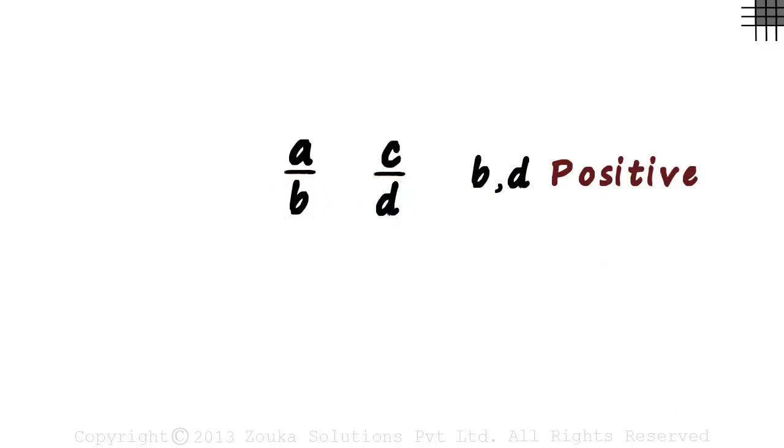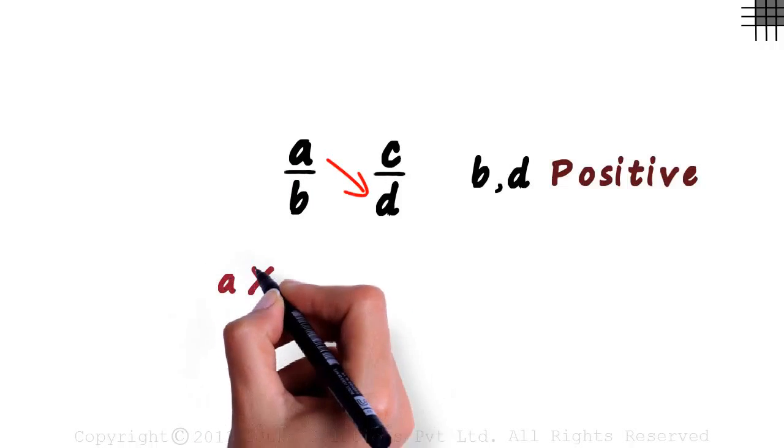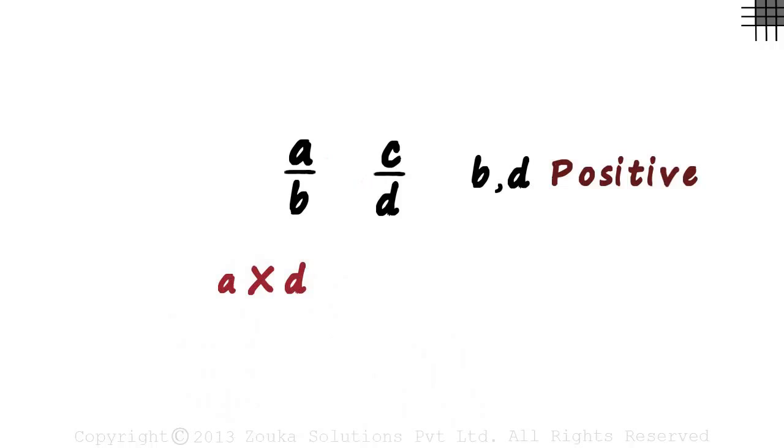To compare them, we just need to look at two products. First, the product of A and D. And second, the product of B and C. Product of these two and these two. But what do we do with these products? How do these two products help us compare the two rational numbers?